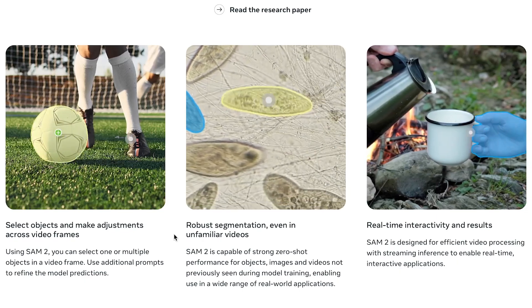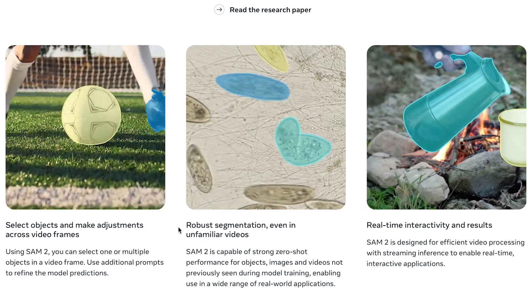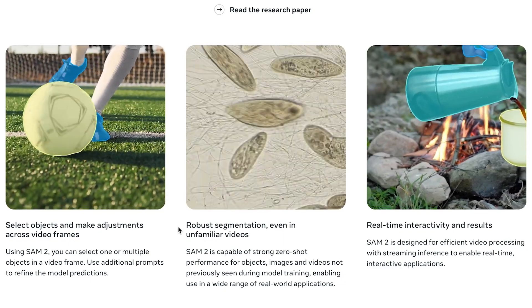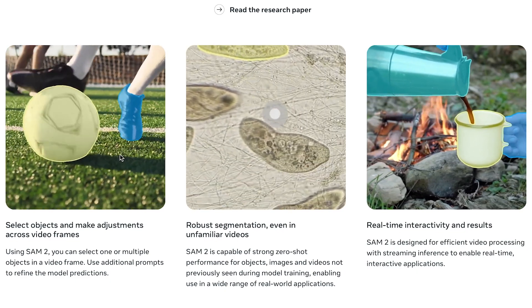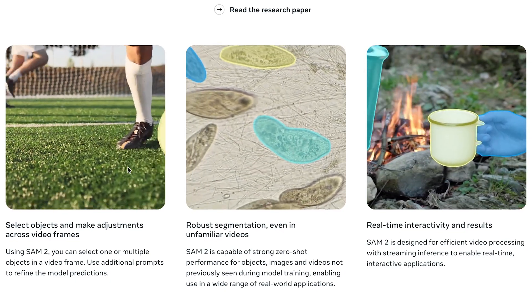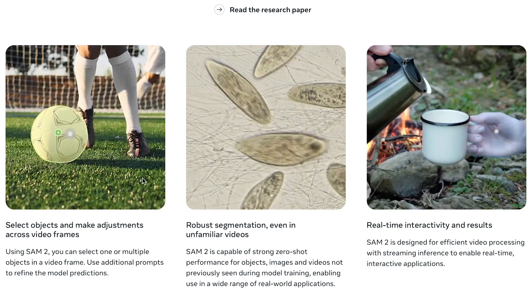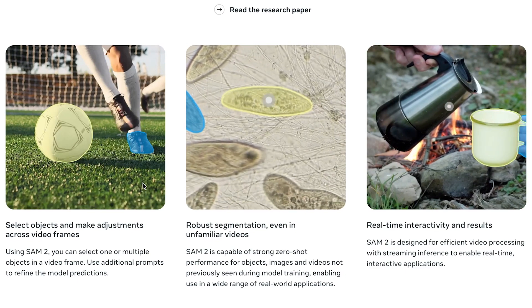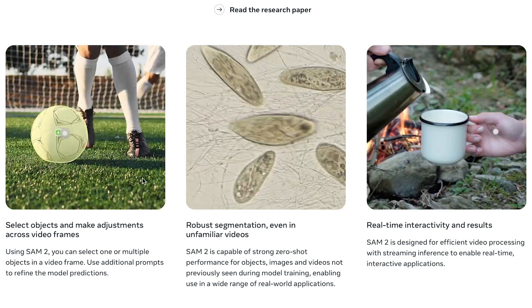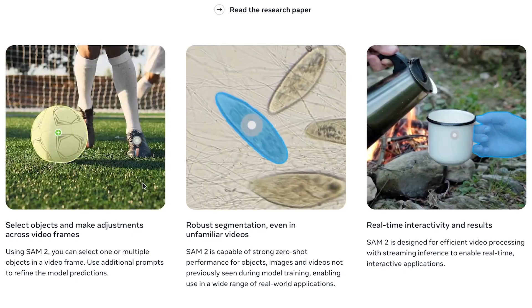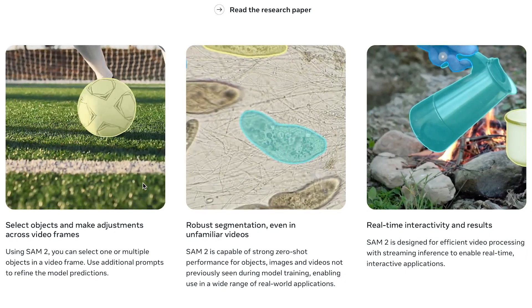Here we can see the model's three major capabilities that give us a sense of how this model can be used in the real world. We can see an example of the technology being used in sports to track a soccer ball and a soccer player's movements. We can also see that you're able to select multiple objects simultaneously, allowing for a lot more control. This opens up a lot of possibilities in video creation and editing, and also just for tracking multiple things.